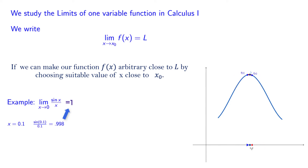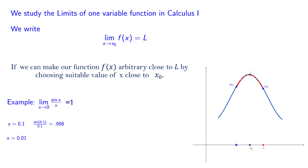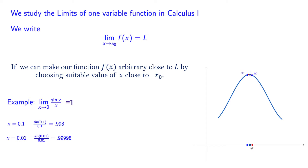Let's get even more close to 0. How about x = 0.01? The function value at this point is 0.998, which is even better. So this convinces us that the limit of sin(x) over x as x approaches to 0 is equal to 1.